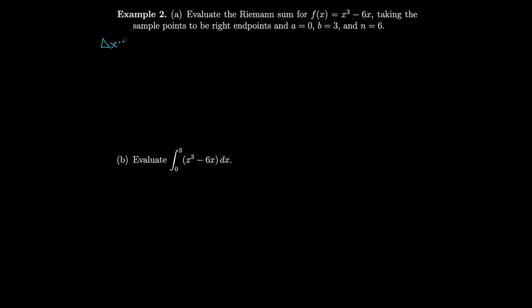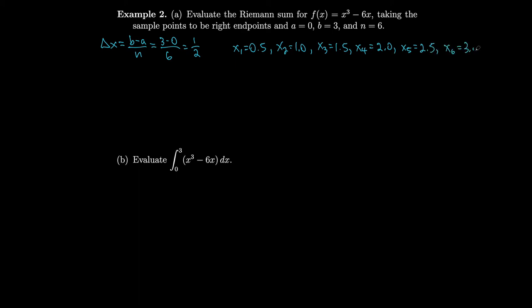Let's evaluate the Riemann sum for f of x equals x cubed minus 6x, taking sample points to be right endpoints, where a equals 0, b equals 3, and n equals 6. Delta x is b minus a over n, which is 3 minus 0 over 6 equals one half. Starting on the right, x1 equals 0.5, x2 equals 1, x3 equals 1.5, x4 equals 2, x5 equals 2.5, and x6 equals 3, which is b.